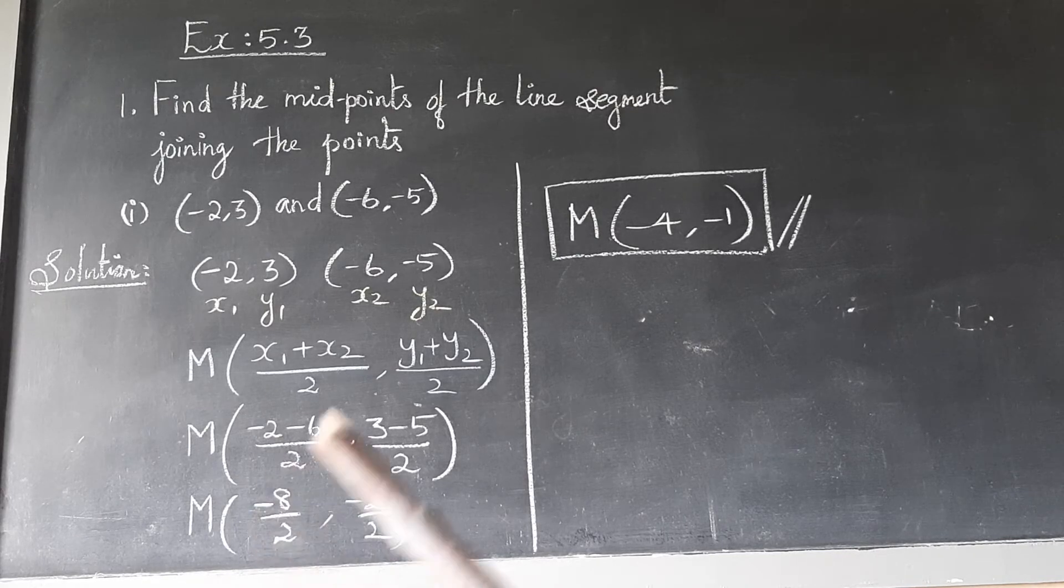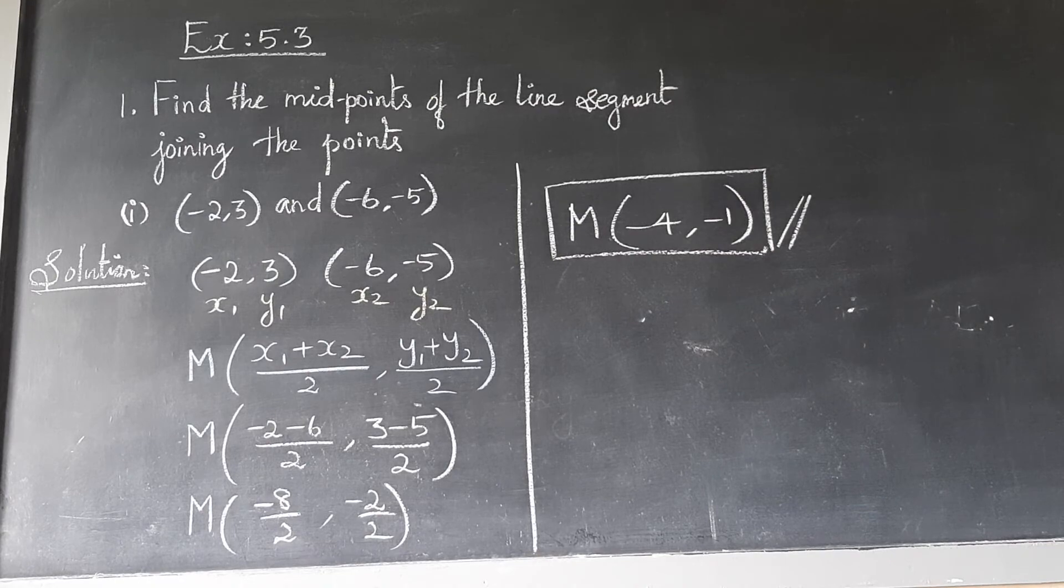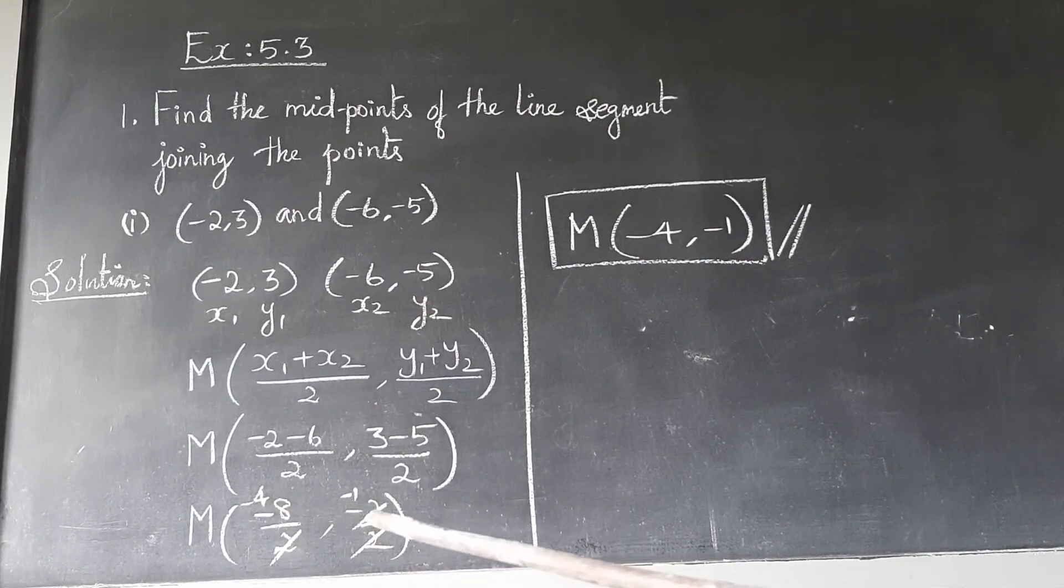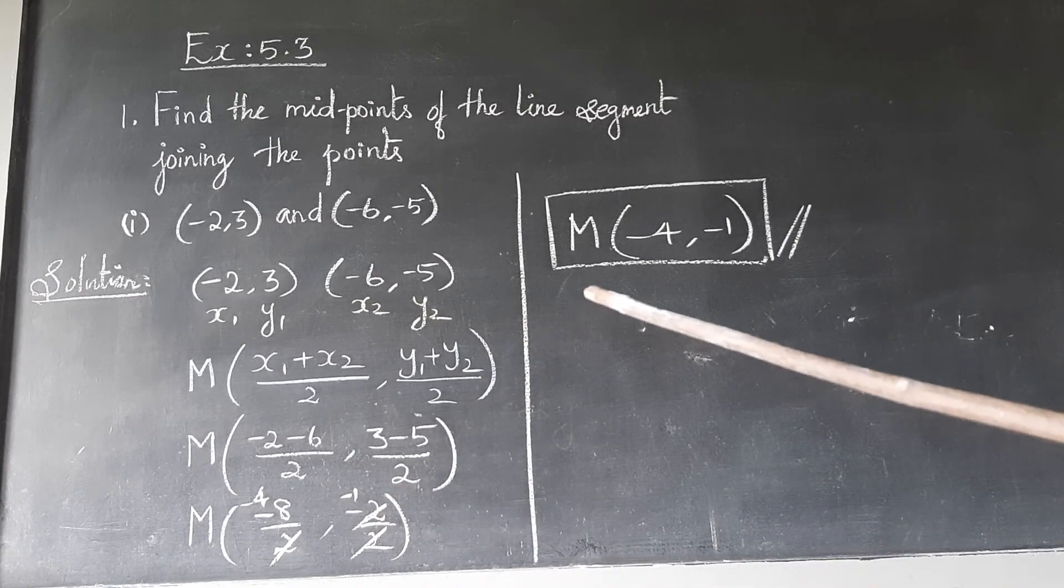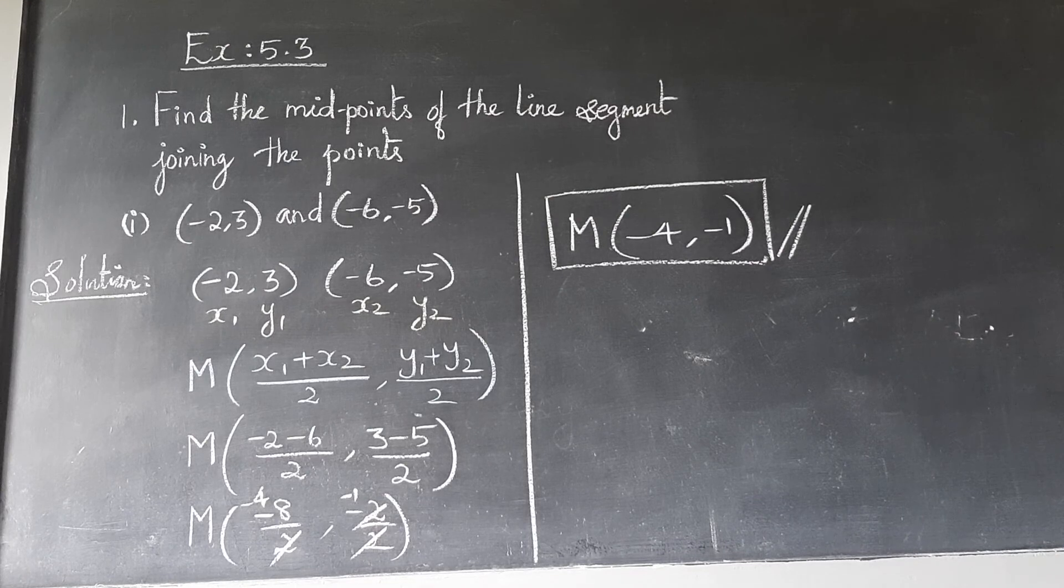The midpoint is (-4, -1). Okay children, if you cancel this you'll get -4 here and -1. The midpoint is (-4, -1).